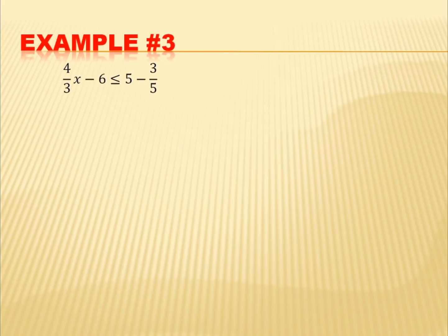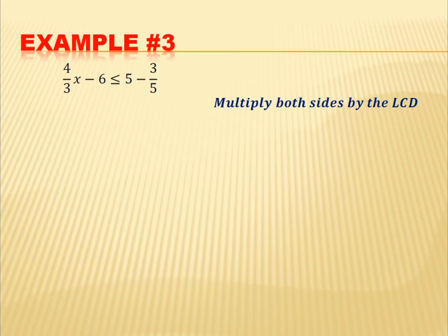Example number 3: 4/3 x minus 6 is less than or equal to 5 minus 3/5 x. First step, we are going to multiply both sides by the LCD of 3 and 5, which is 15. Our denominators here are 3 and 5, so we find the LCD, and that's 15.